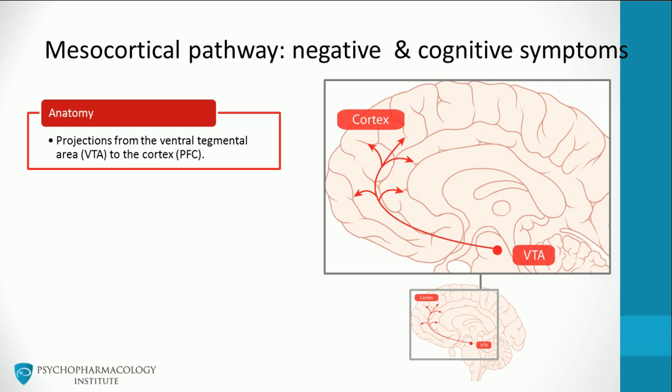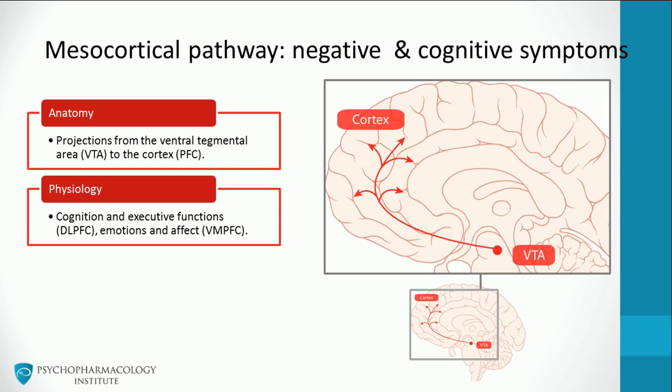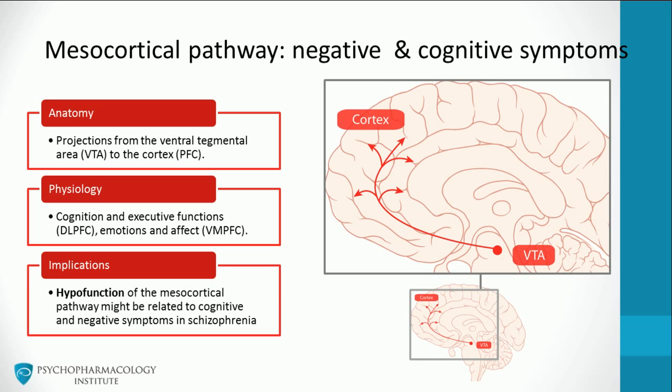The mesocortical tract is made up of dopaminergic neurons that project from the ventral tegmental area to the prefrontal cortex. The mesocortical pathway is thought to be relevant to the physiology of cognition and executive function, mainly the dorsolateral prefrontal cortex, and emotions and affect, mainly the ventromedial prefrontal cortex. The implication is that hypofunction of the mesocortical pathway might be related to cognitive and negative symptoms of schizophrenia.